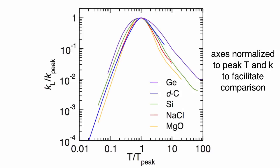Now what we've done, though, for the axes is normalize them. So we've normalized the temperature in terms of the temperature at which the thermal conductivity peaks, and we've normalized the magnitude of the thermal conductivity in terms of the magnitude of that peak point.